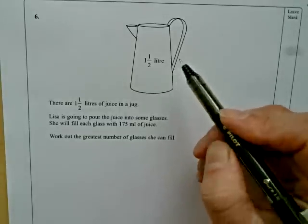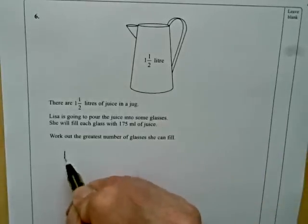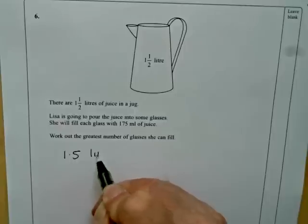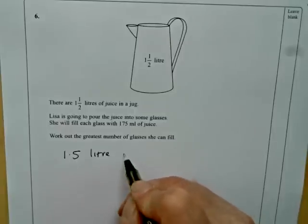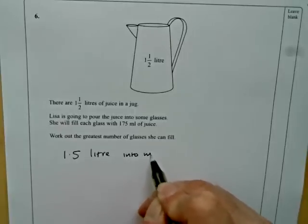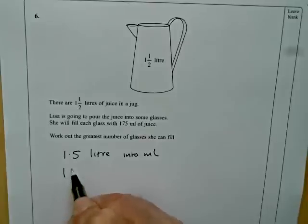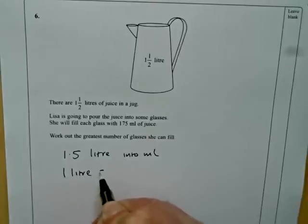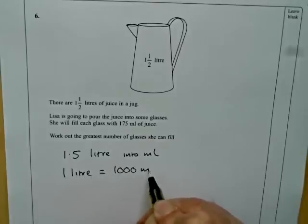To do this, we're first of all going to have to convert 1.5, that's one and a half litres, 1.5 litres into millilitres. You need to know that one litre equals one thousand millilitres.